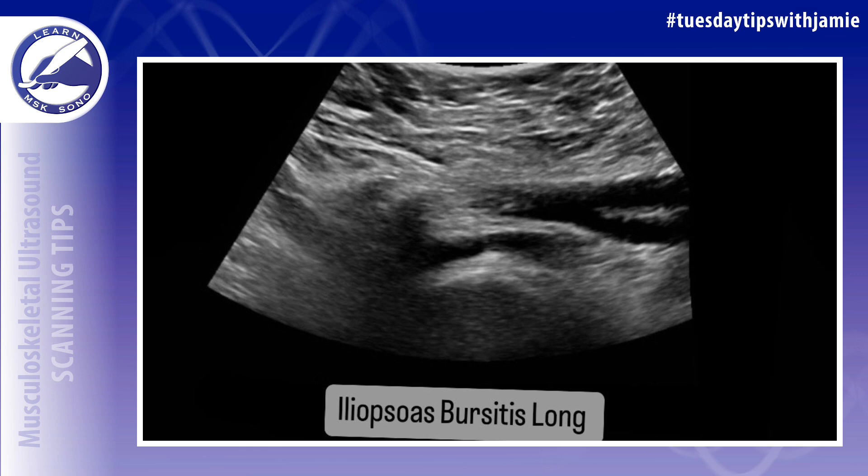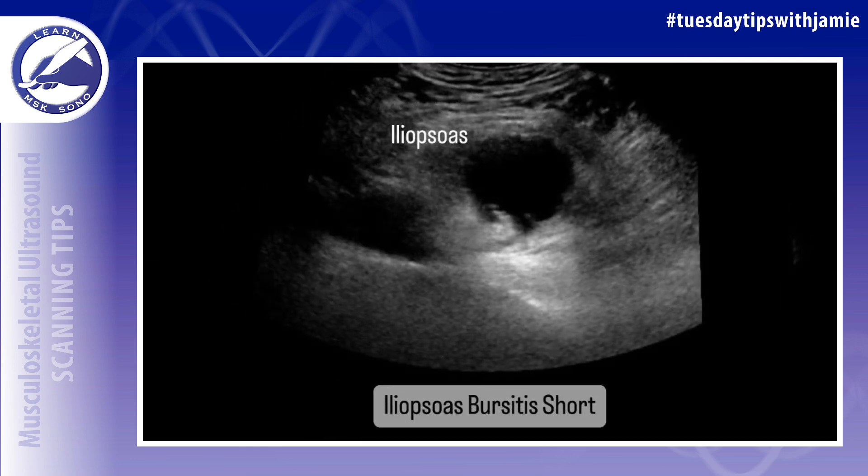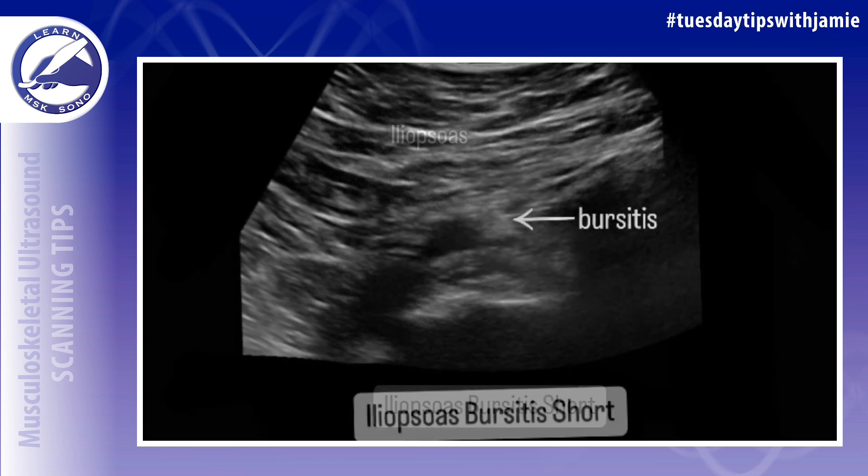When the bursa is distended, it first forms a U-shape beneath the tendon, and as it fills with more fluid, it can track deep to or within the iliopsoas muscle. It is also possible for the bursa to communicate with the hip joint.